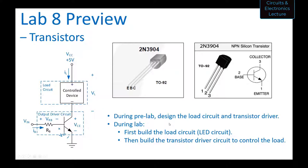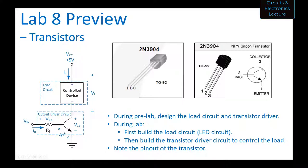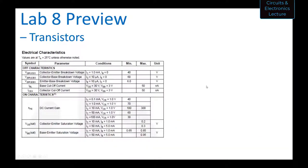Note the pinout of the transistor — one side of the package has a flat side. You can see which of the three pins is the emitter, which is the base, and which is the collector. Pay attention to which pin is emitter, base, or collector. You have the same designation with pins 1, 2, and 3, and you can see which terminals those correspond to on the transistor schematic diagram.